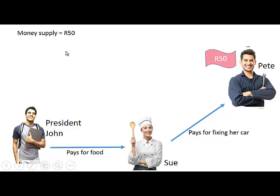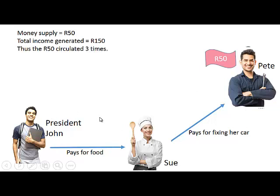So we can see that the money supply in this economy is 50 Rand, but the total income that was generated is 150 Rand because the 50 Rand circulated three times, and we call this the velocity of money.